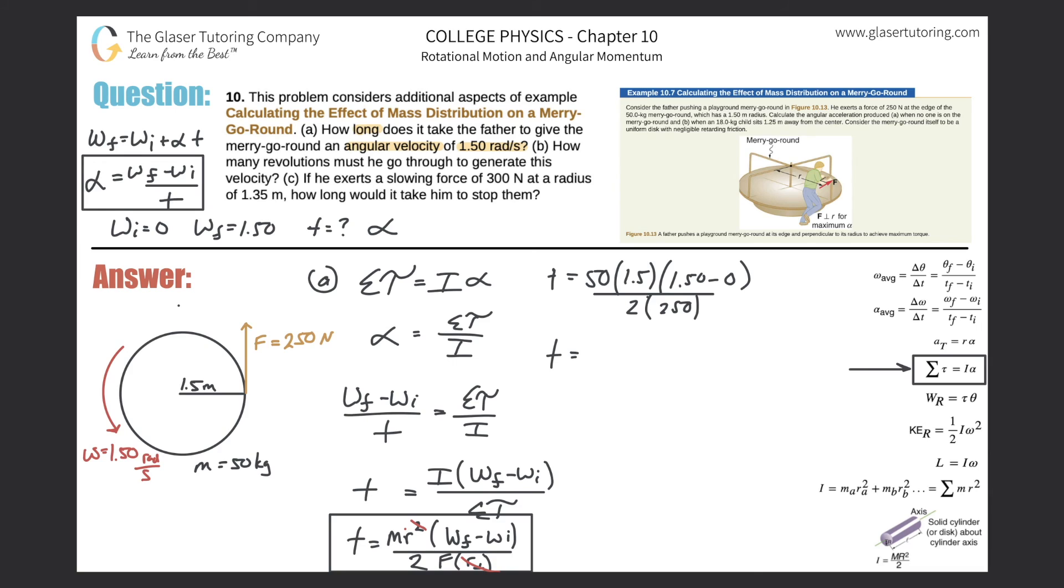So the time here will now be 50. Let's calculate that. So 50 times 1.5 times 1.5, and then divide that now by two times 250. So 0.225 seconds. That's how fast it takes to get to that particular angular velocity. So that's letter A.